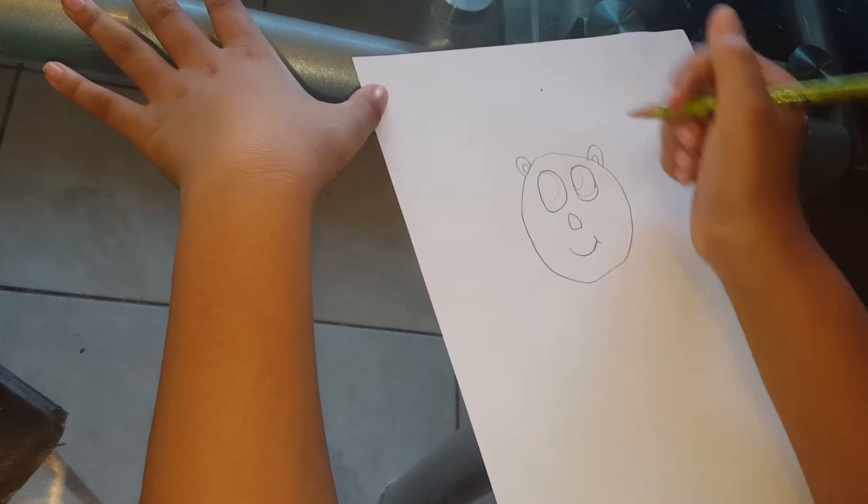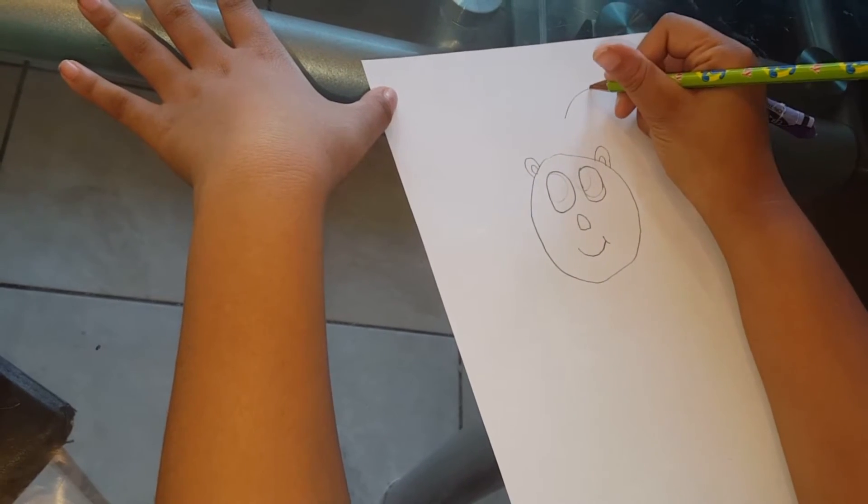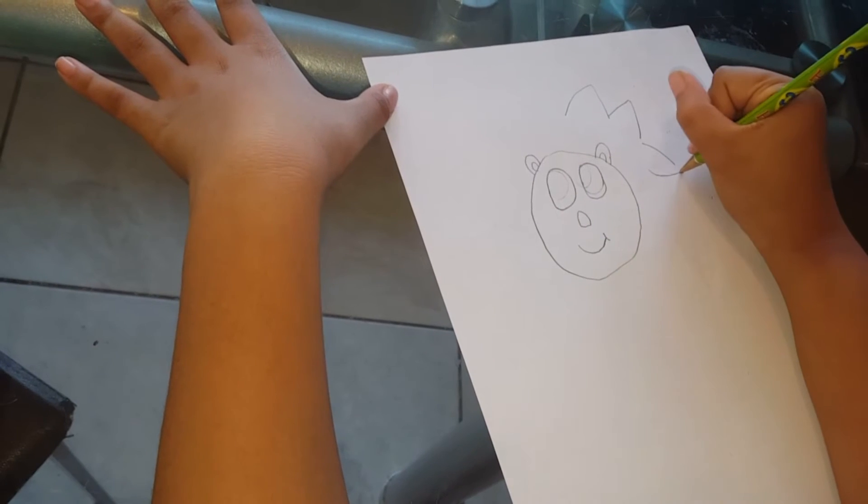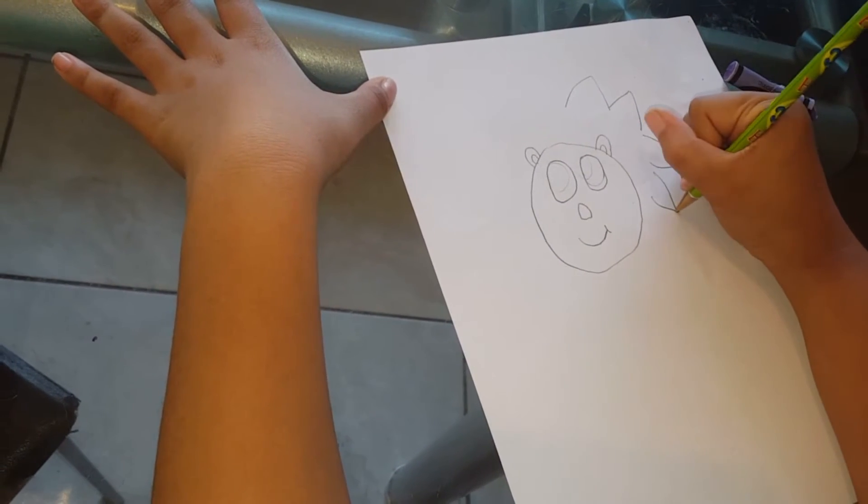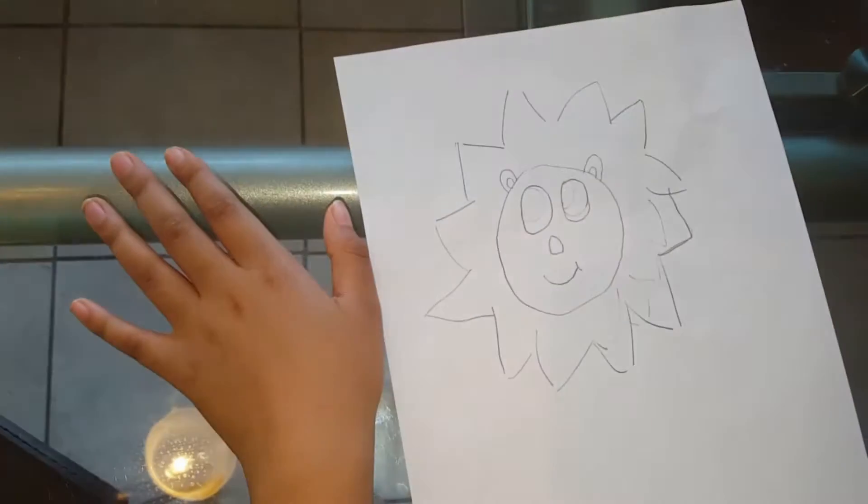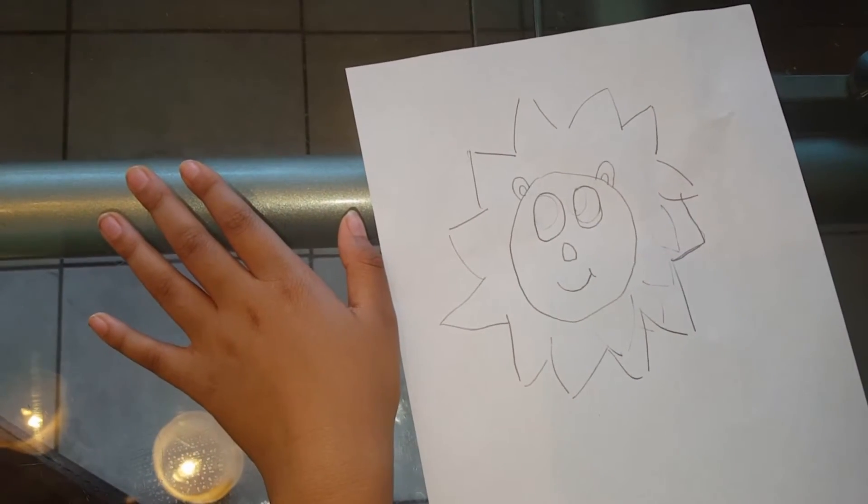Now we're going to go on to the mane. Oh yeah, we're going to color in the eyes later. You can draw the mane as big or small as you want. So the mane should look something like this.